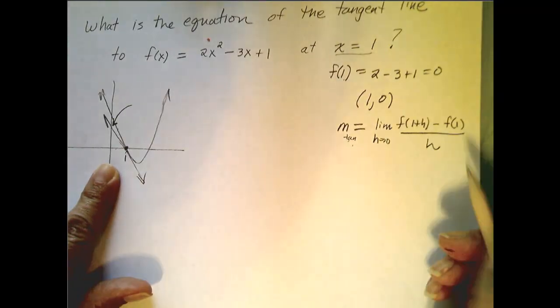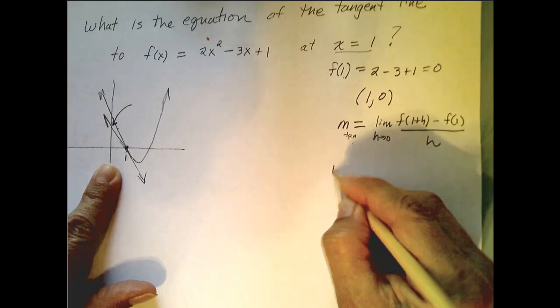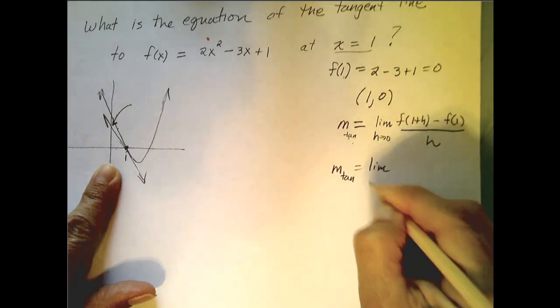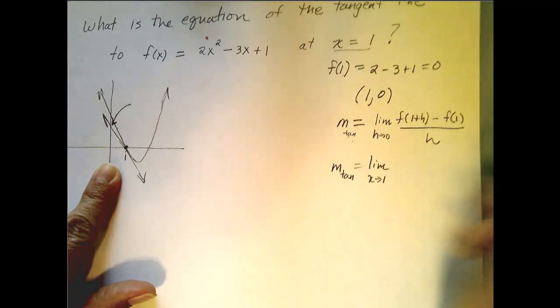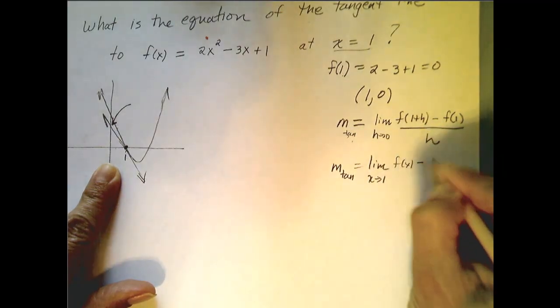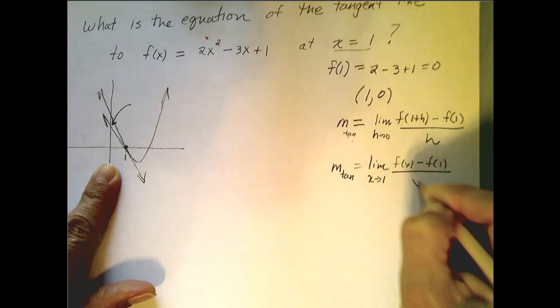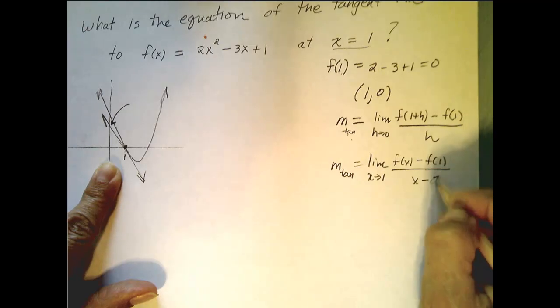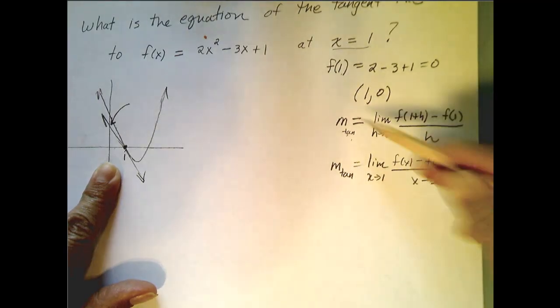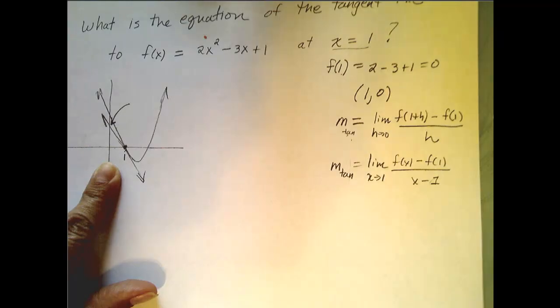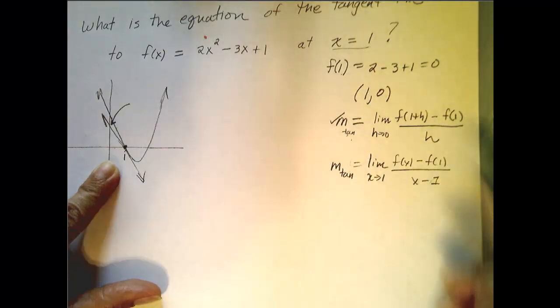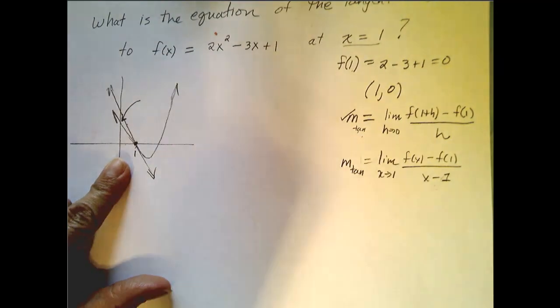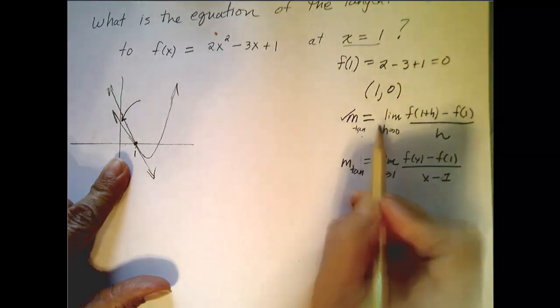Remember, that was one of the ways we expressed that limit. Another way was the limit as x approaches 1 of f of x minus f of 1 all over x minus 1. You can use either one to find this slope. I tend to like this one, so this is the one I'm going to use. It's a good idea for you to try this limit on your own to see if we get the same thing.